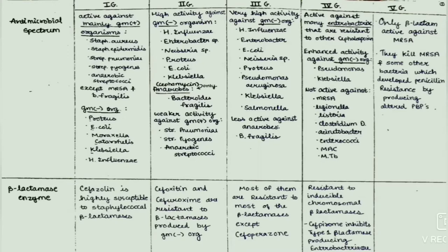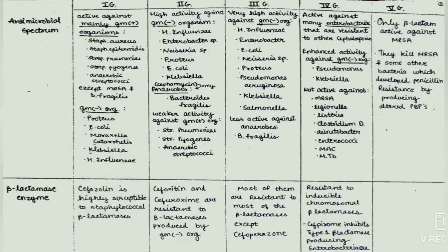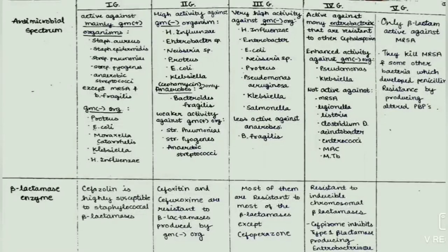The second generation cephalosporins have high activity against gram-negative organisms like H. influenzae, Enterobacter species, Neisseria species, Proteus, E. coli, and Klebsiella. Only the cephamycin group of second generation cephalosporins has activity against anaerobes like Bacteroides fragilis. They have weaker activity against gram-positive organisms like Strep pneumoniae, Strep pyogenes, and anaerobic streptococci.